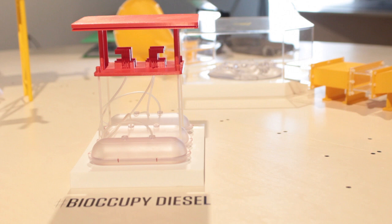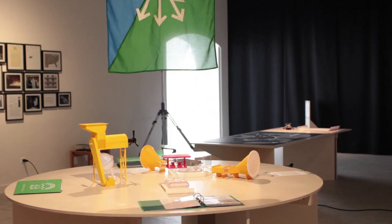What you see here are scale models, the tests that the group would carry out before actually fully engaging in the action. One is about disrupting the diesel industry by infecting the tanks with a diesel bug.